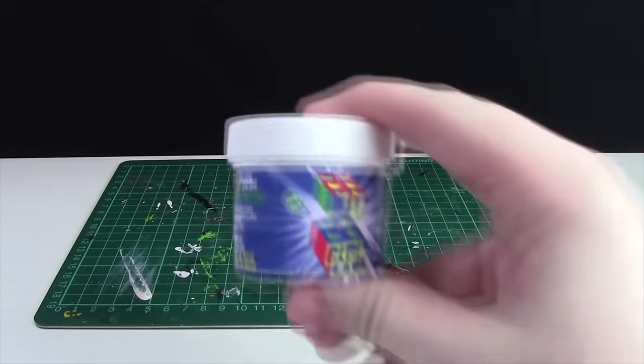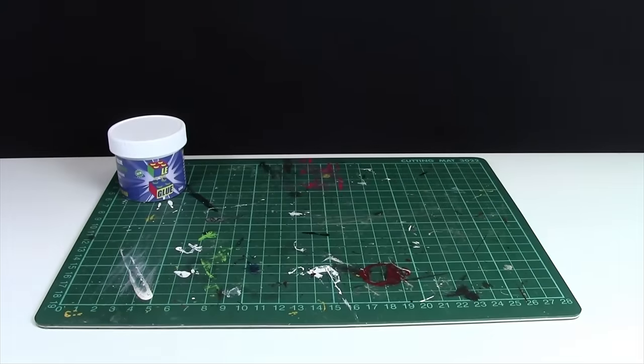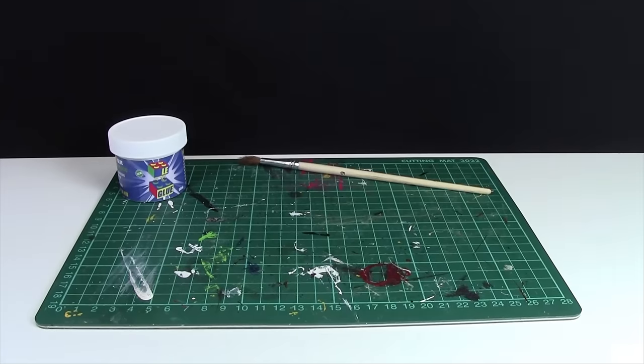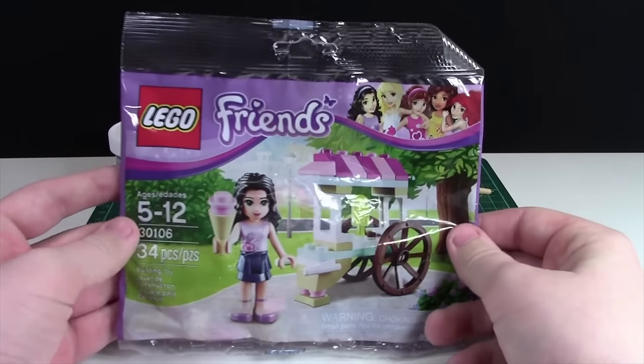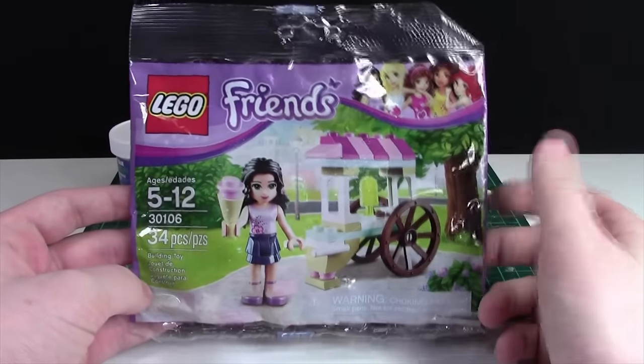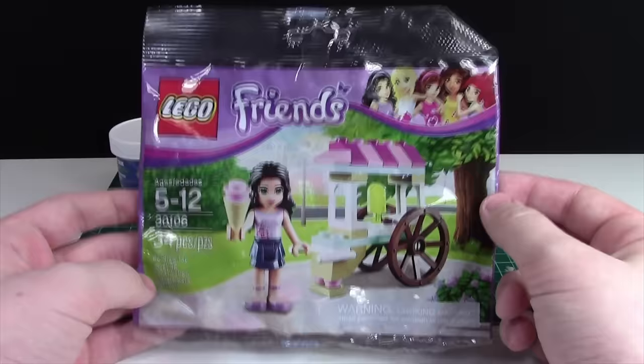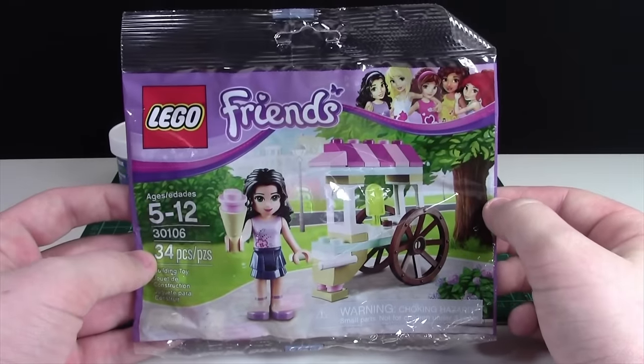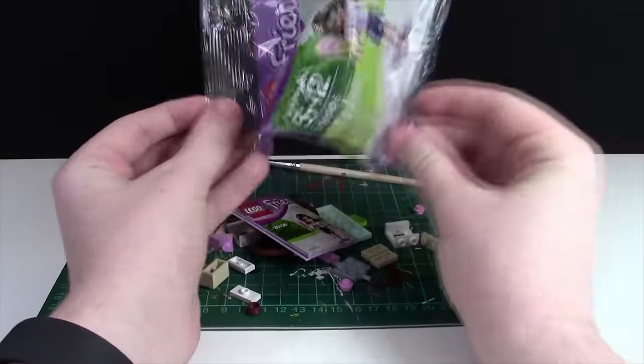Now I've got my cutting mat in place. I'm going to set my Leg Glue and paintbrush off to the side and get the LEGO set that I'll be building today. I decided I'm going to build this LEGO Friends set and glue it together. Let me get all the pieces out of the bag.